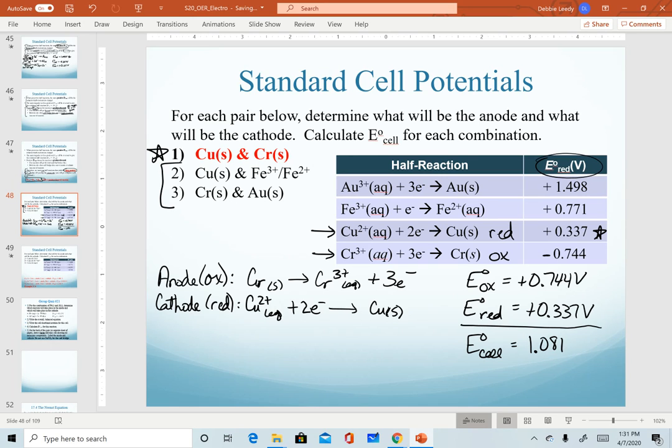What about sig figs? So think about the math we did. We just added these two potentials together. That means we're going by least decimal places. These both go to three. So my answer goes to three decimal places with units of volts.